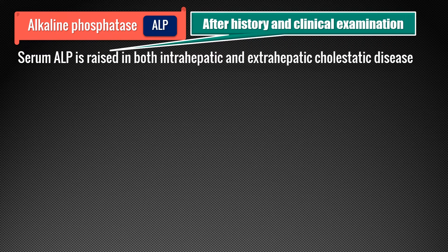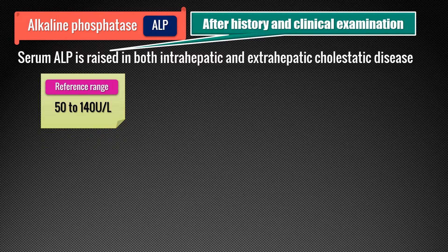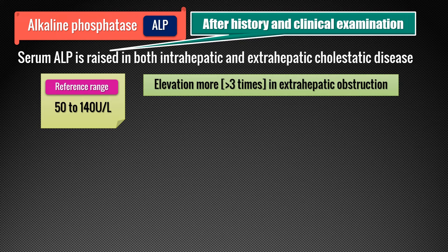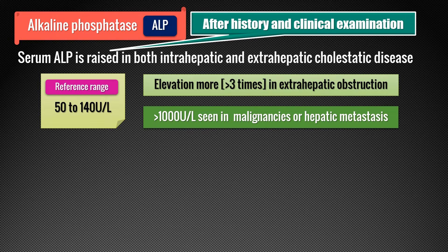Elevation of serum alkaline phosphatase always indicates cholestasis, which could be intrahepatic or extrahepatic obstruction. The normal level is somewhere between 50 to 140 international units per litre. Elevation more than 3 times the normal value is seen in extrahepatic obstruction — meaning the elevation of alkaline phosphatase is greater in post-hepatic or extrahepatic obstruction compared to intrahepatic obstruction. Gross elevation above 1000 units per litre is usually seen in cancer or malignancies, which could be primary or secondary.